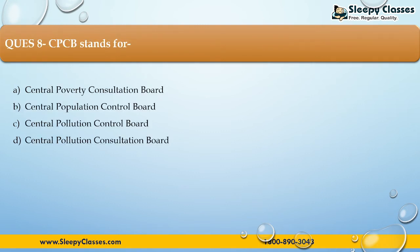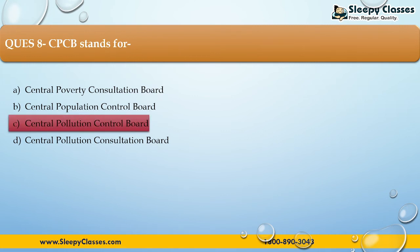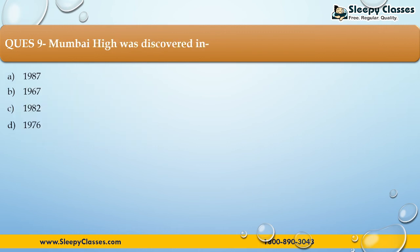The next question: CPCB stands for — First, Central Poverty Consultation Board; Second, Central Population Control Board; Third, Central Pollution Control Board; Fourth, Central Pollution Consultation Board. The correct answer is option C — Central Pollution Control Board. It was created to control pollution and measure air pollution levels in different cities, as well as water pollution levels.